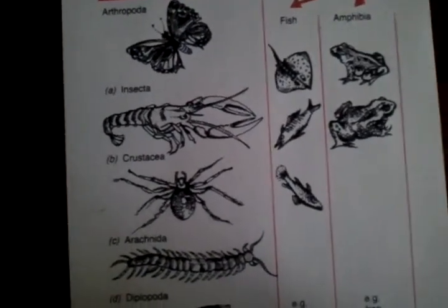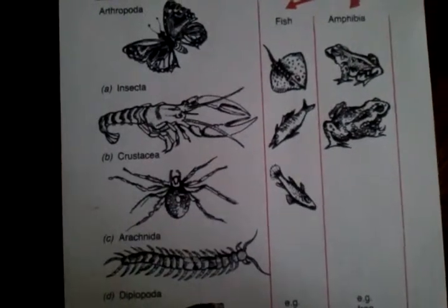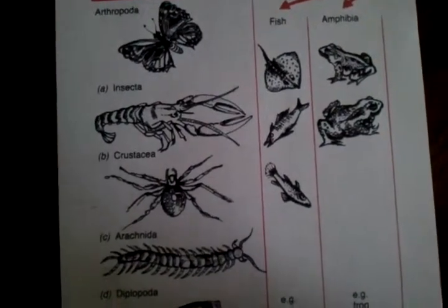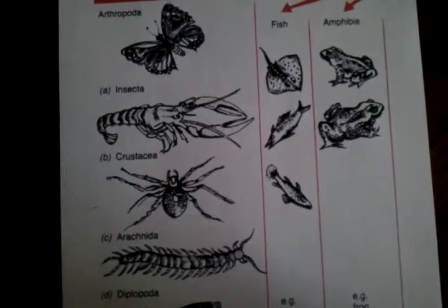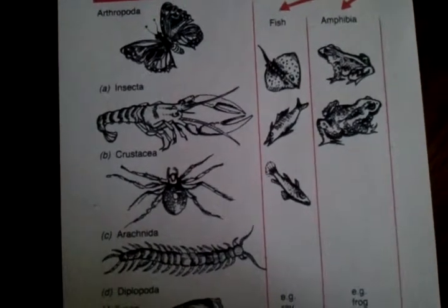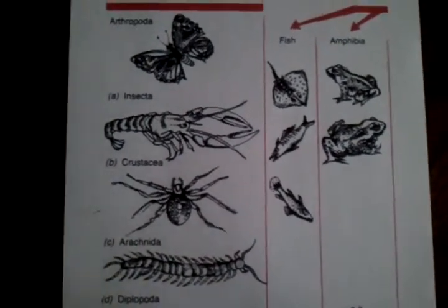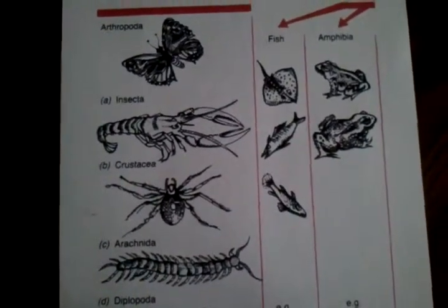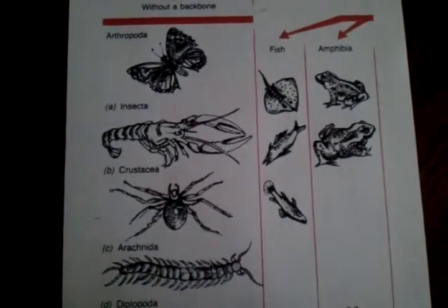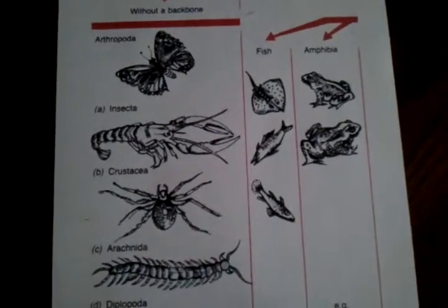Invertebrates are animals that do not have a backbone. They have a hard outer shell that protects their organs. There are a lot more invertebrates than vertebrates — about 97% of all animals are invertebrates. Some examples of invertebrates are bacteria, worms, snails, starfish, spiders, insects, and crabs.